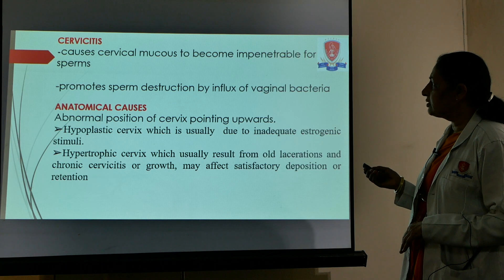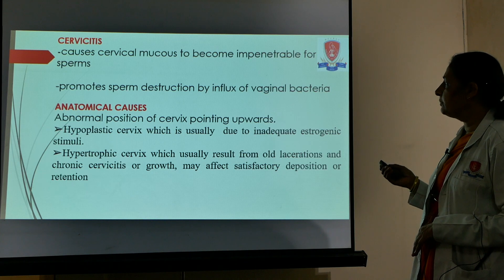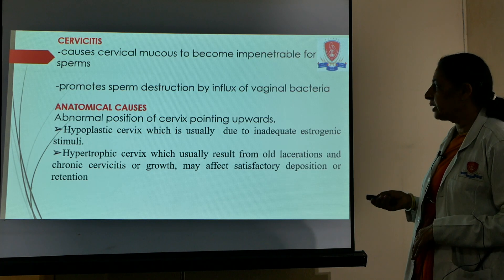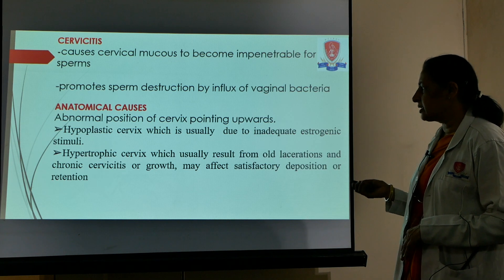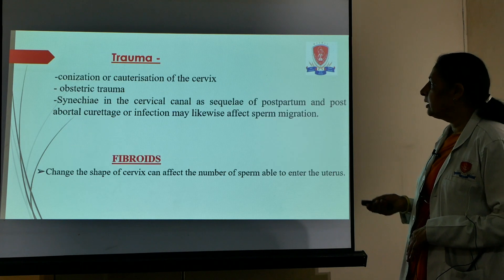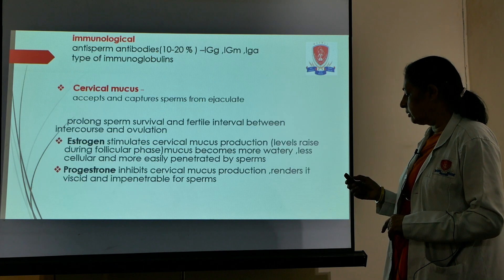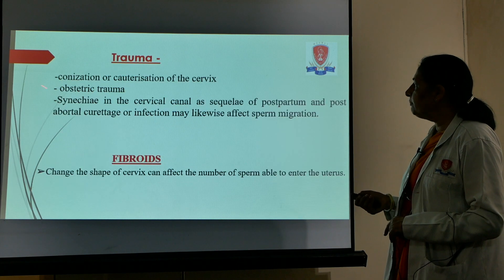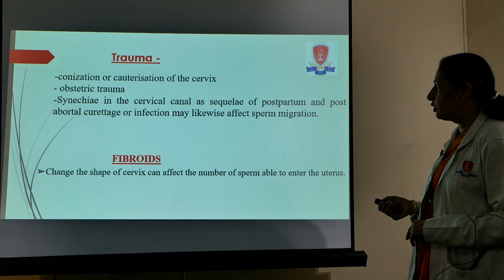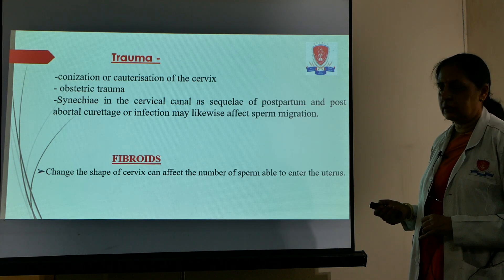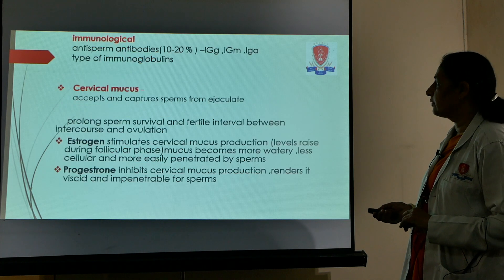Cervicitis is an important cause because the cervical mucus becomes impenetrable by sperms and promotes sperm destruction by the influx of vaginal bacteria. Anatomical causes can be abnormal position of the cervix, hypoplastic cervix, or hypertrophied cervix. Trauma to the cervix can occur because of cauterization, and synechiae in the cervical canal can result from postpartum and post-abortal curettage. Repeated curettage can also cause this, and fibroids can change the shape and cause stenosis of the cervix.